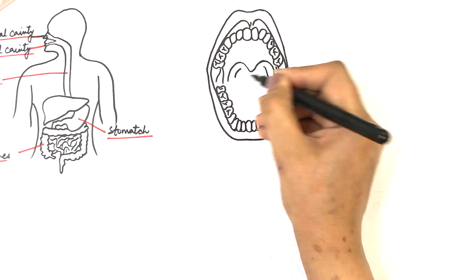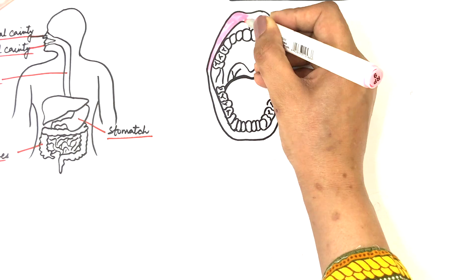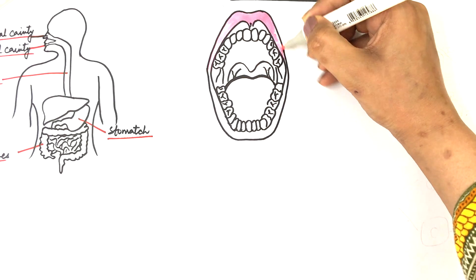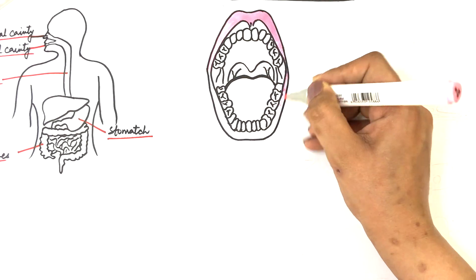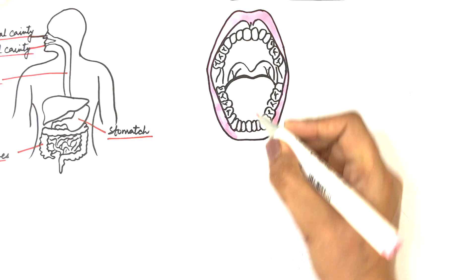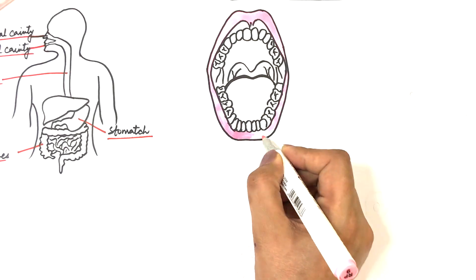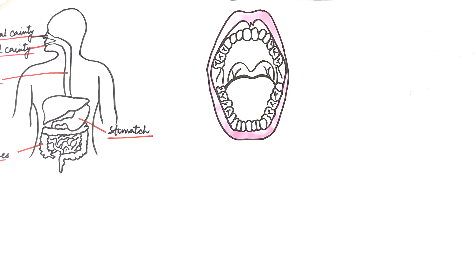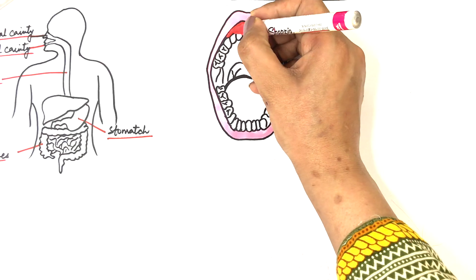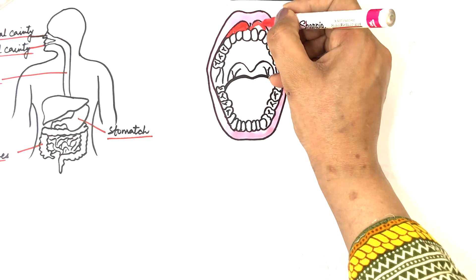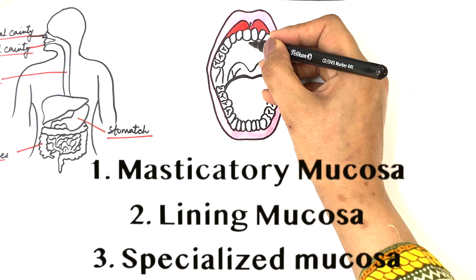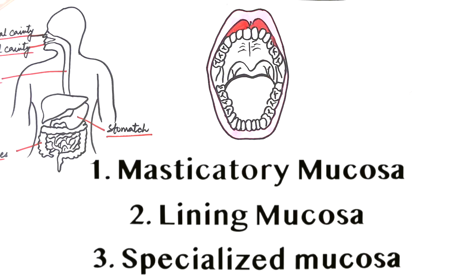The classification of oral mucosa is based on their location and functions, the differences in their histologic features, and the presence or absence of keratinization. Oral mucosa is classified into three types: the masticatory mucosa, the lining mucosa, and the specialized mucosa.